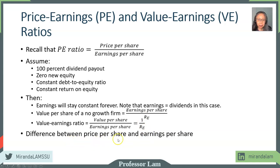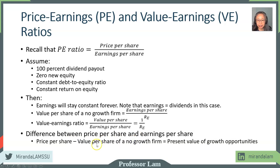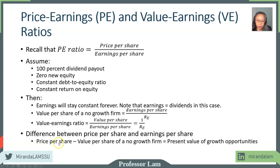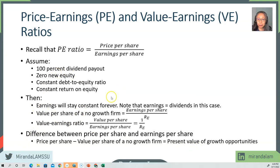The difference between the price per share and the value per share of a no-growth firm represents the present value of growth opportunity. If we assume the market price is correct and the market is efficient, then the difference between these two represents the value that the market assigns to the growth opportunity of the firm.